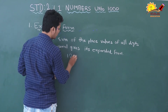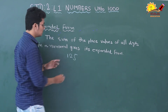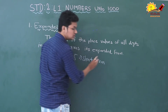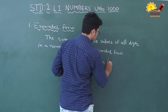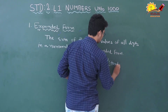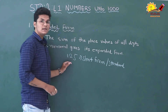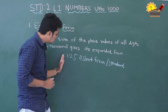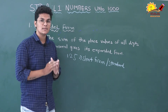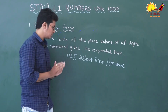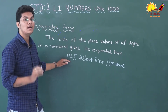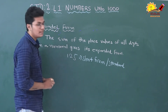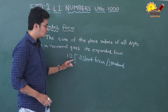For example, number 125. So, this is the short form of the number. Yeh number ka short form hai, ya use hum standard form bhi kehte hain. Ab use hum expanded form mein likhna hai. To kya karenge? Ki hum is number mein jitne bhi digits hain, un sab ki place value ka summation likhenge. Number 125 mein 5 kaunse place pe hai? 5, one ke place mein hai.